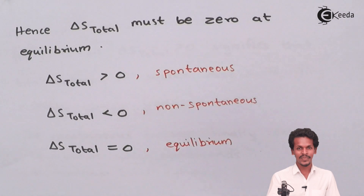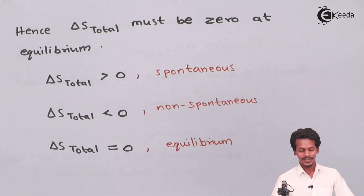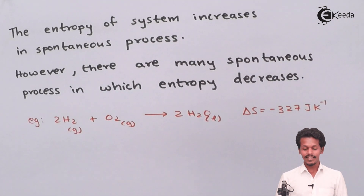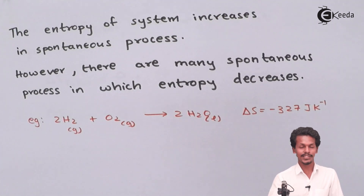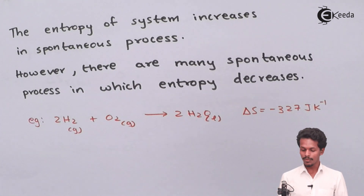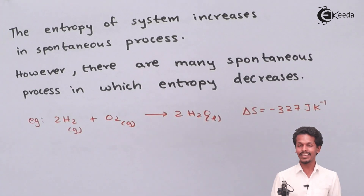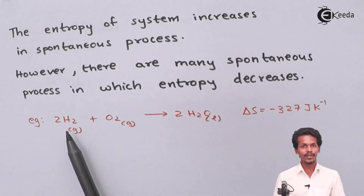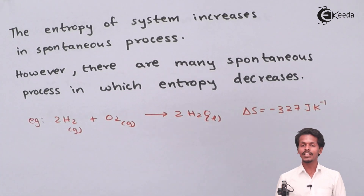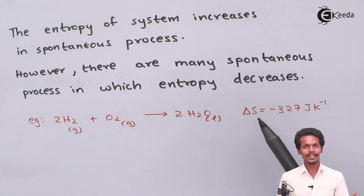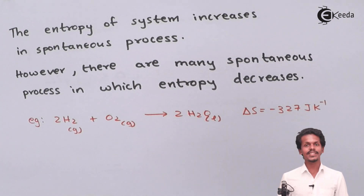Moving on, we generally say that entropy of the system increases in a spontaneous process, but this is not always true. For example, consider: 2H₂(g) + O₂(g) → 2H₂O(l). Here, the entropy change has been determined to be −327 J/K, which is a negative value. This negative value might suggest the process is non-spontaneous, but that is not correct.